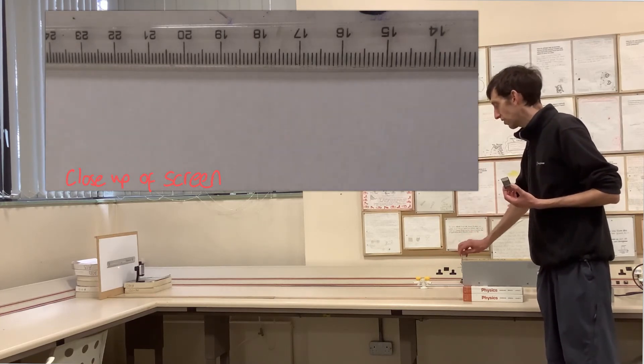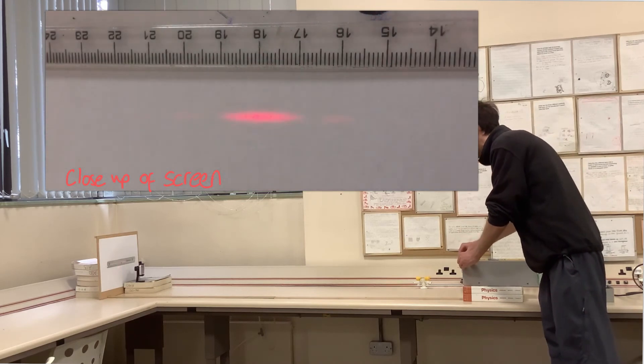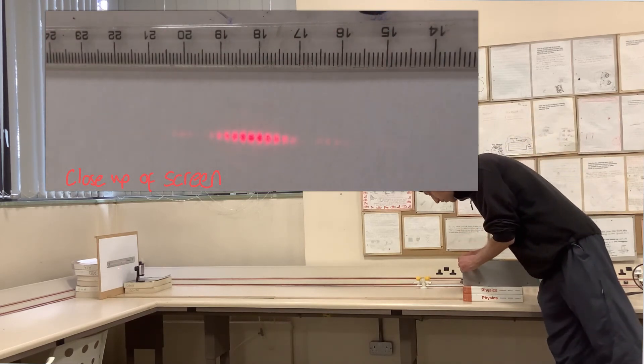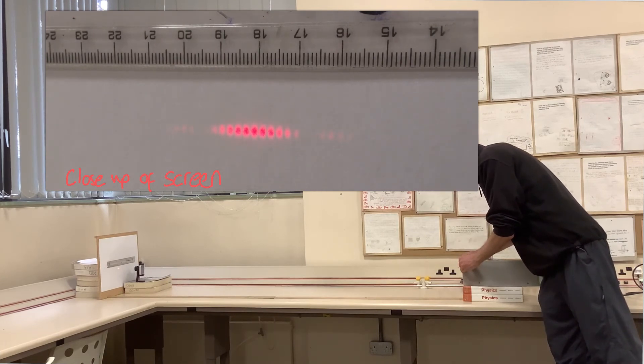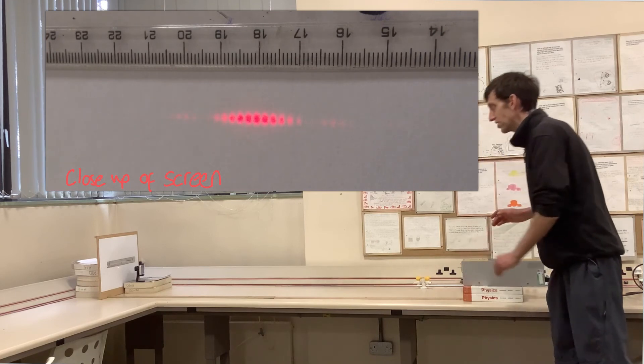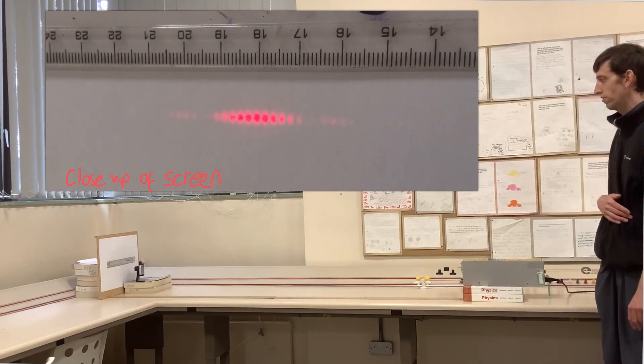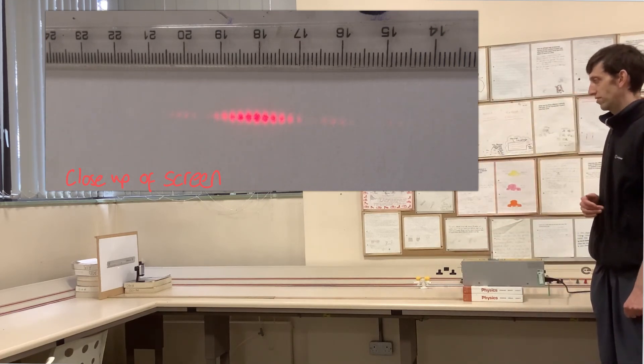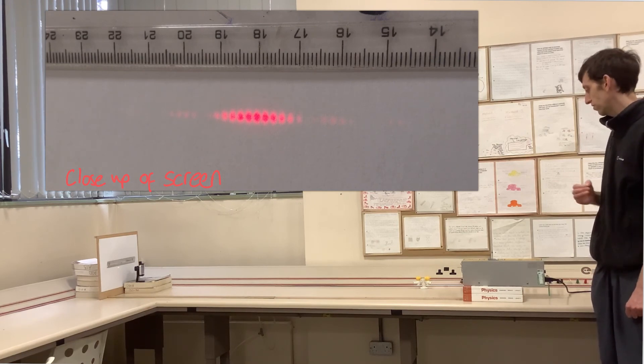So I'm going to take that one out and I'm going to put my 0.5mm one in place. I have to try and get it so that the laser light is falling on both of the slits in that 0.5mm slit spacing. That's it, here we go.